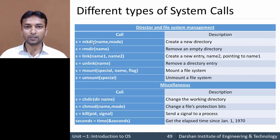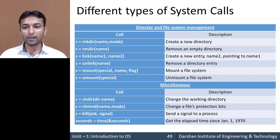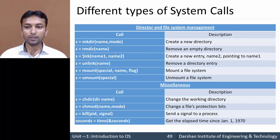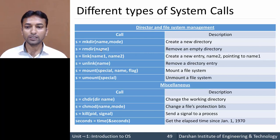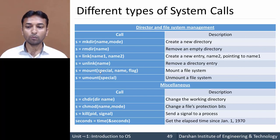The first system call is mkdir (make directory), used to create a new directory. Second is rmdir (remove directory), used to remove an empty directory. Then link, used to link a file into another file — it creates a new entry, name2, which points to name1. Opposite to link is unlink, which removes a directory entry. Then mount, used to mount a file system, and unmount, used to unmount a file system.